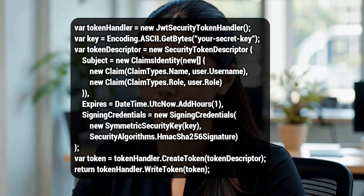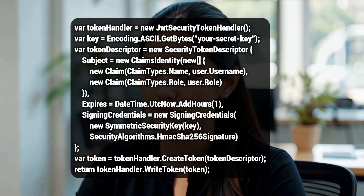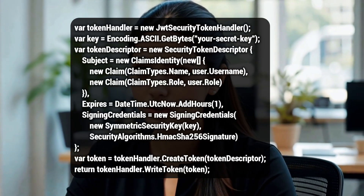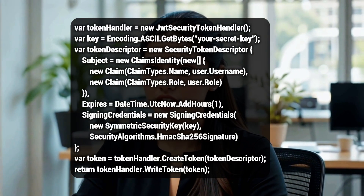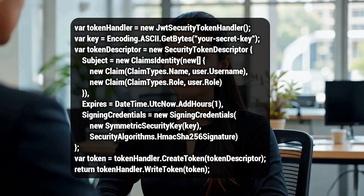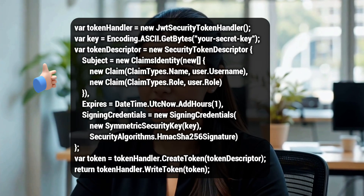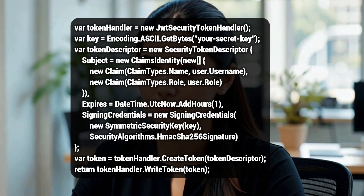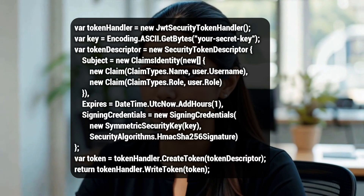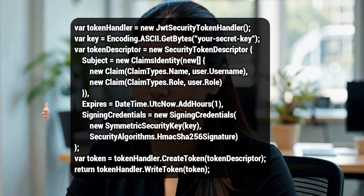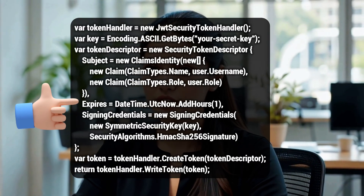How is the token actually created? Token generation typically happens in a login or authentication method after a user's credentials have been verified. I start by using the JWT security token handler to do the heavy lifting. I'll define the token's content using a security token descriptor — just an object that describes what goes into the token. The most important part is the subject, where I create a new claims identity and add the user's claims, like their username and, critically, their role from the database. I'll also set an expiration time, usually something short like one hour for security.